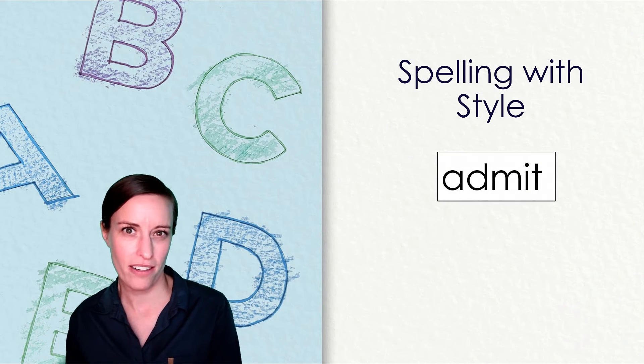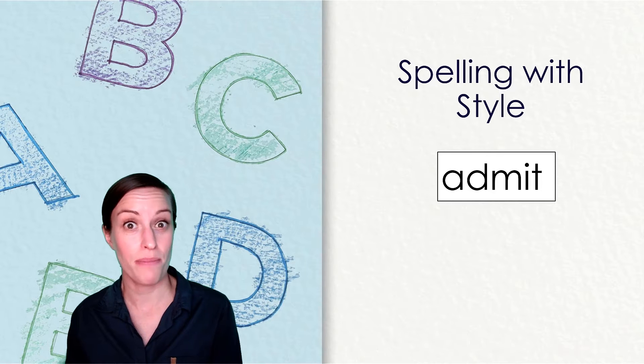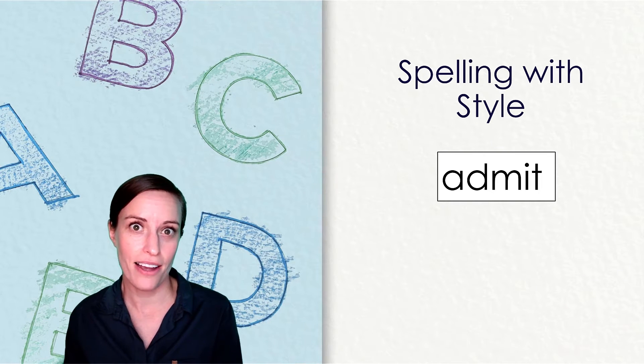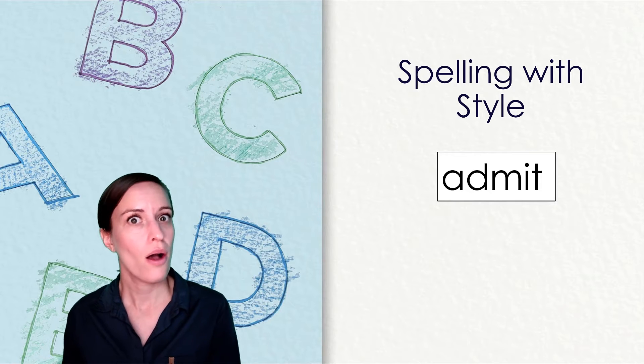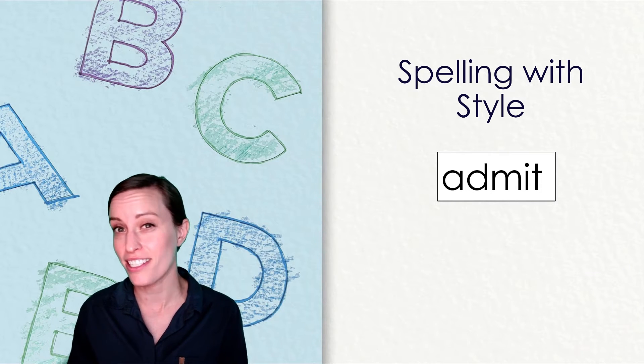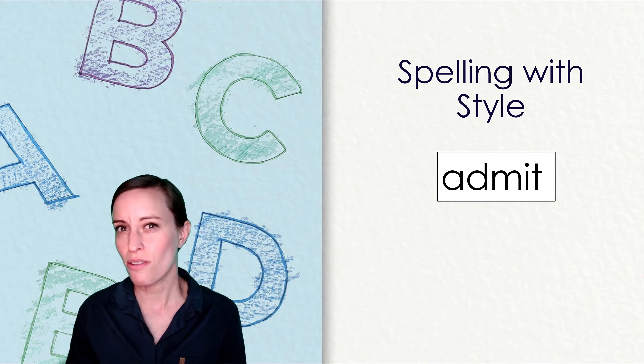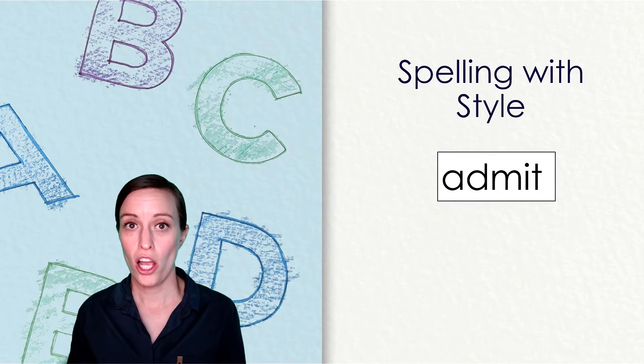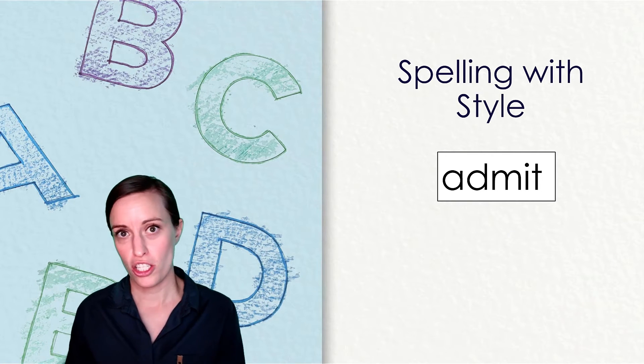Here is our first word. If I want to spell this word admit, I could use one style the whole time. Or I could change my style with each syllable. Let's do the first one. A-D-M-I-T.